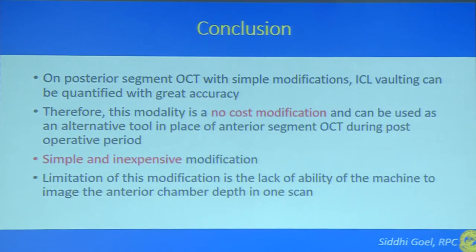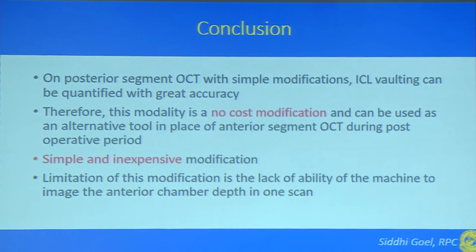To conclude: on posterior segment OCT with simple modifications, ICL vaulting can be quantified with great accuracy. This modality is a no-cost modification and can be used as an alternative tool in place of ASOCT during the post-operative period. It is a simple and inexpensive modification which can be used as a comprehensive ophthalmic imaging tool for both anterior and posterior segment evaluation. The limitation of this modification is the lack of ability of the machine to image the anterior chamber depth in one scan.